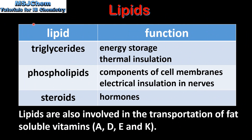Next we'll have a look at the functions of lipids. Triglycerides are used as energy storage and thermal insulation in the human body. Phospholipids are used as components of cell membranes and they also provide electrical insulation in nerves.